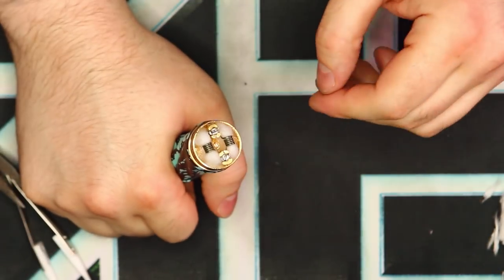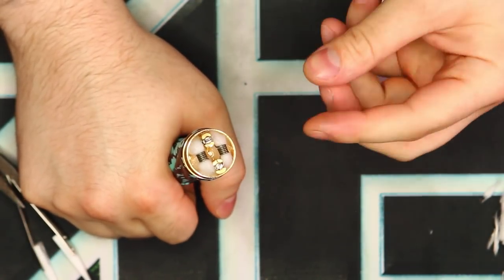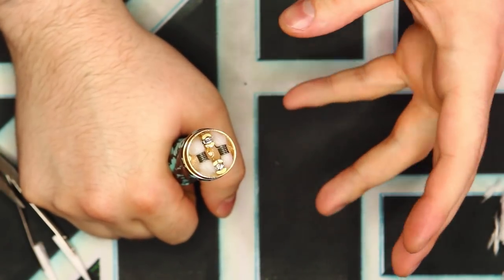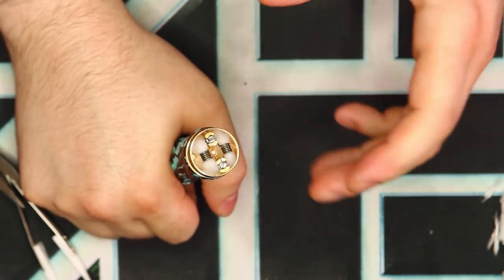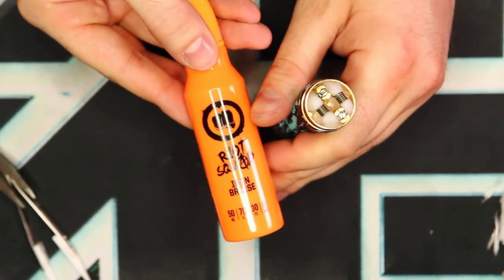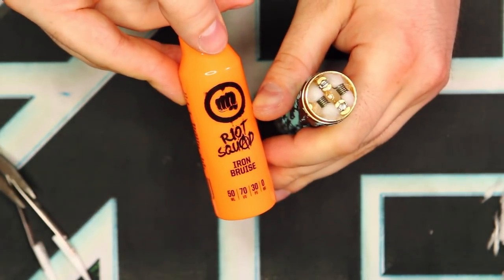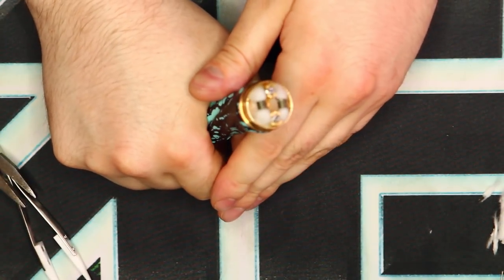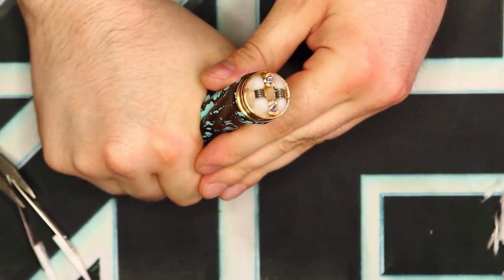Alright guys, so the wicking process was pretty standard here, basically just get your cotton as tight as possible inside those coils, fluff it up a little bit, and tuck it down into the juice well. And I saturated it today with some Riot Squad e-liquid. This one is called Iron Brews, and it's a kind of a citrusy menthol, and it's kind of interesting. So let's go ahead and check out some vapor production real quick.